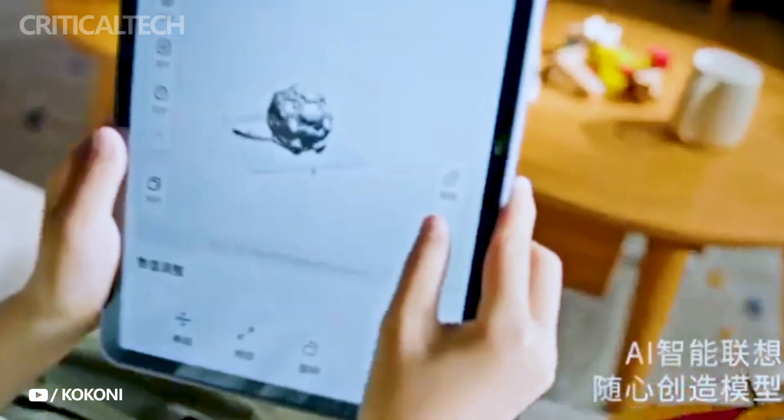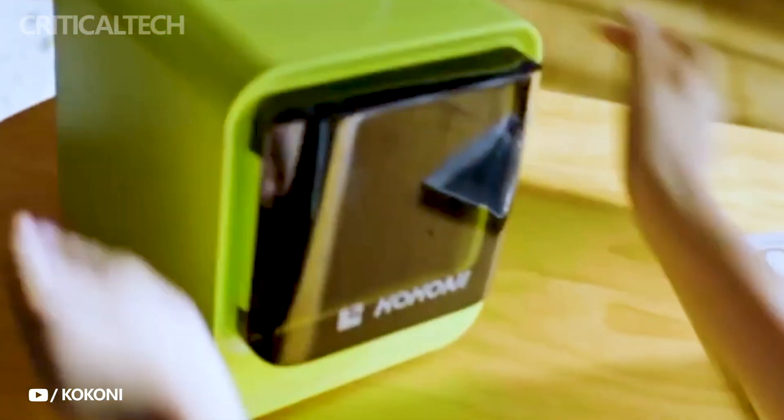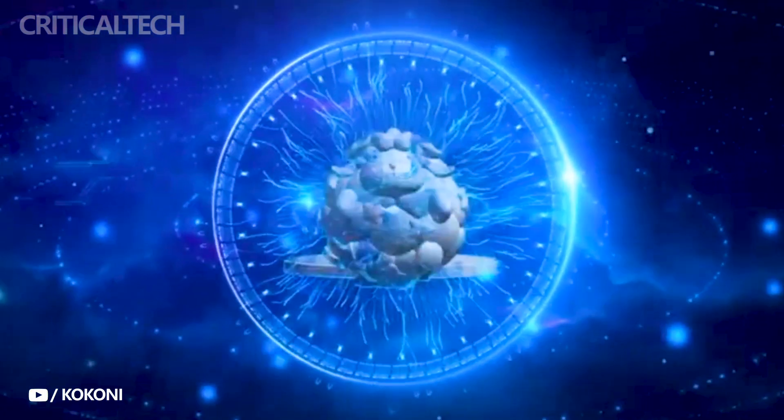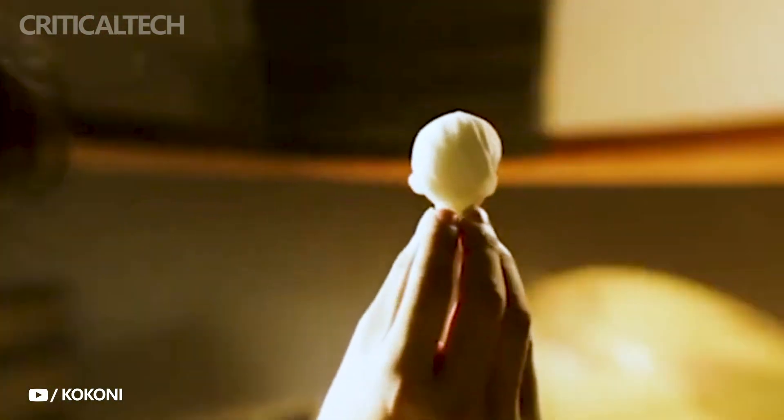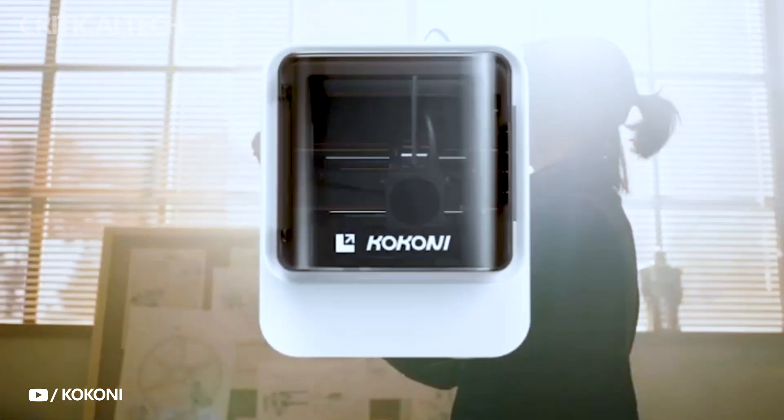At the heart of the EC2 lies its cutting-edge Kokoni I system, which provides a host of intelligent modeling functions. Gone are the days of wrestling with complex setup processes. This printer offers an intelligent app control option, allowing you to control and manage your printing tasks directly from your smartphone. No wired connections to fuss over, it's all at your fingertips.